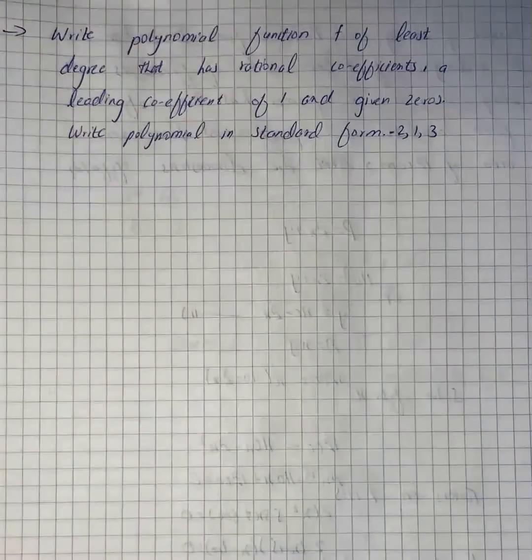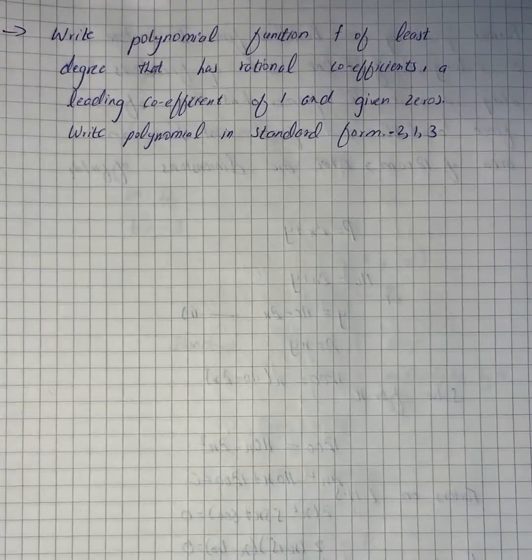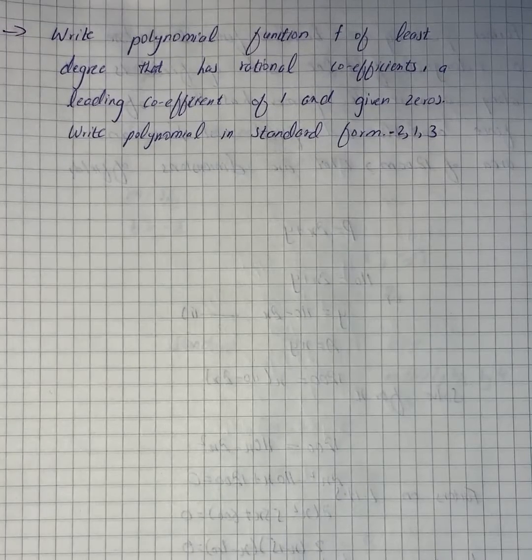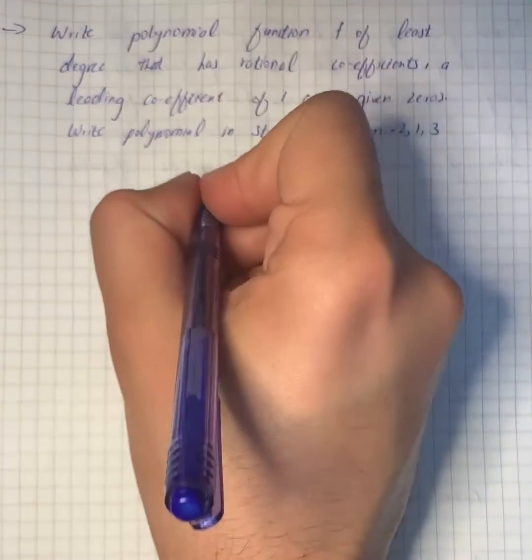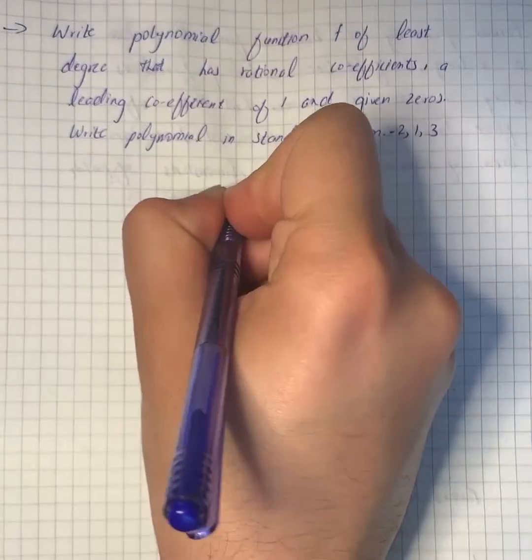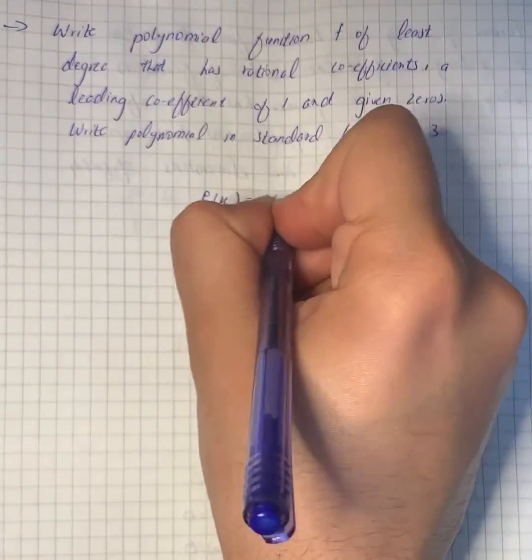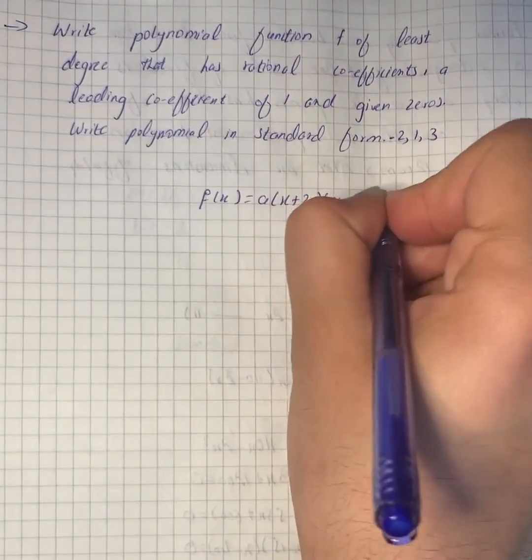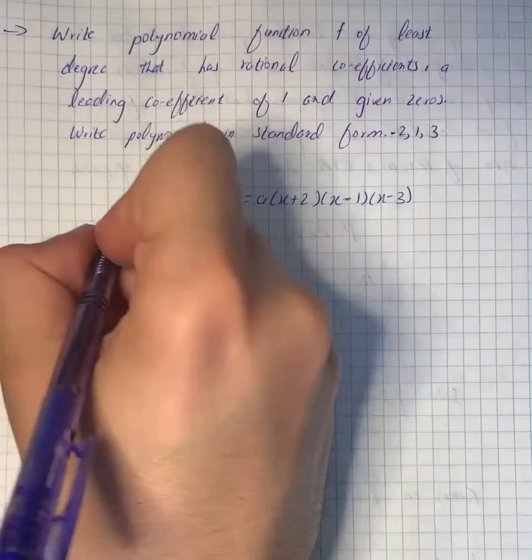Given zeros minus 2, 1, and 3, we can write the function f(x) equals a into x plus 2 into x minus 1 into x minus 3. Now we will expand the function.